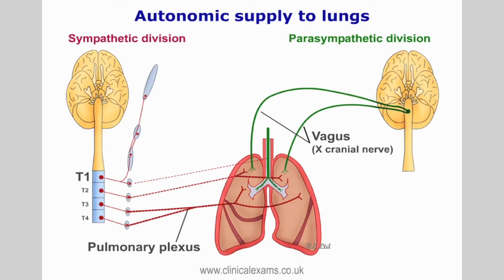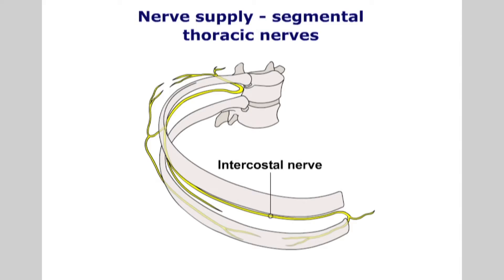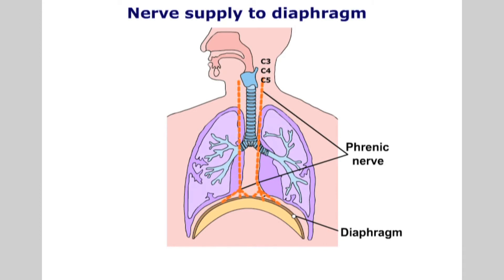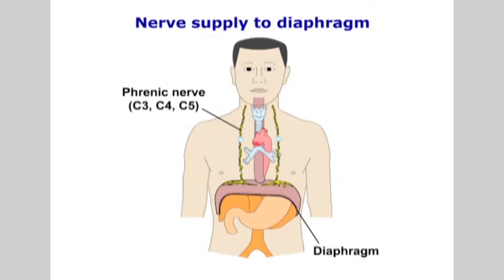In terms of nerve supply, the internal structures of the lungs are supplied by the parasympathetics from the vagus nerves and segmental sympathetic fibers. The pleural membranes and the intercostal muscles are supplied by segmental somatic efferent and afferent fibers from the thoracic region. The diaphragm is innervated by the phrenic nerve, which originates from C3, C4 and C5. It descends the neck, then through the mediastinum, to pierce the diaphragm and supply it from its inferior surface.